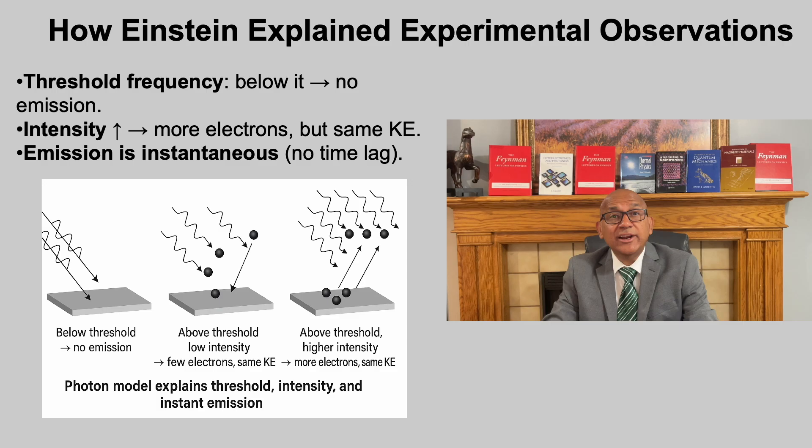Einstein's photon model explained three puzzling facts that classical wave theory could not. First, there is a threshold frequency. If light is below this frequency, no matter how intense, it cannot eject electrons, because each photon lacks the minimum energy.